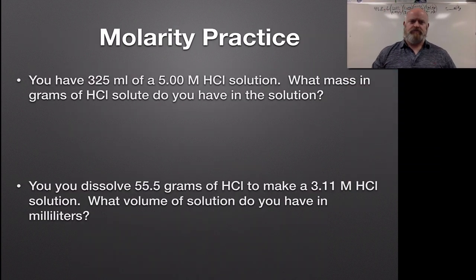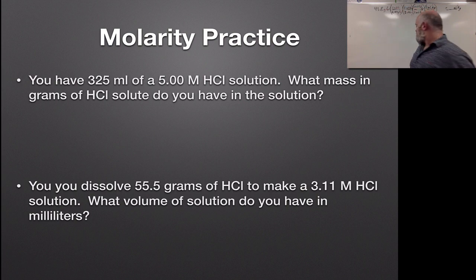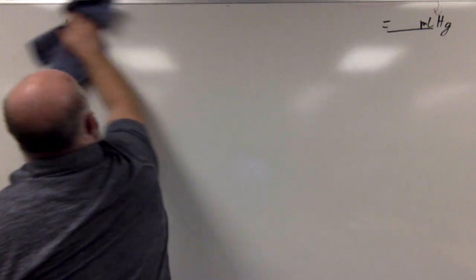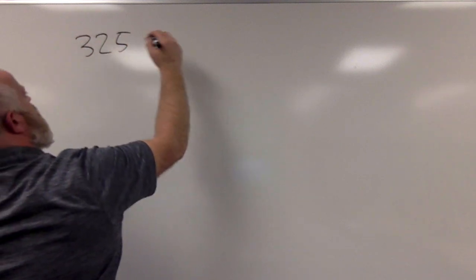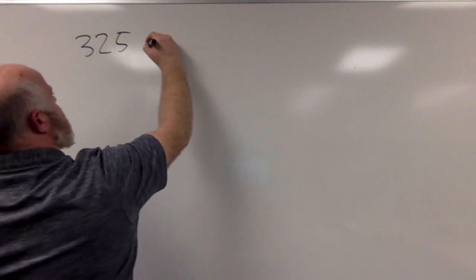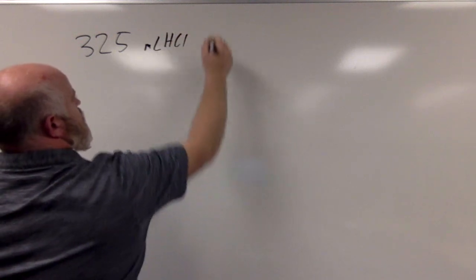So let's do a little practice with this one also. We have 325 milliliters of a 0.500 molar HCl solution. What mass in grams of HCl solute do you have in the solution? So we started off, we have 325 milliliters of a solution. So the 325 is the number that we want to start with because that's not a ratio. That's the exact amount.